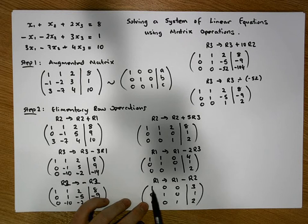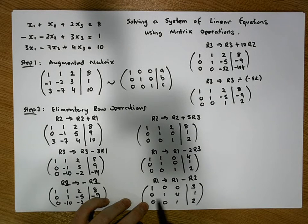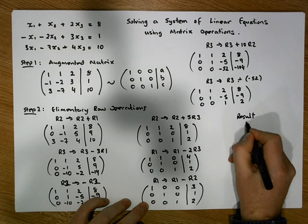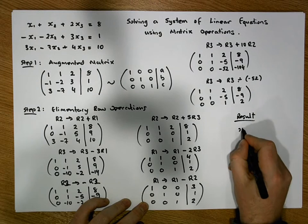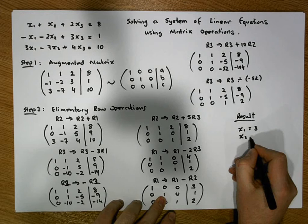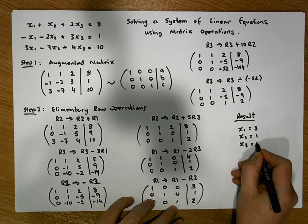So actually, what we've effectively done here is we've solved this system of linear equations. So actually, the result here is that x₁ must be equal to 3, x₂ must be equal to 1, and x₃ must be equal to 2.